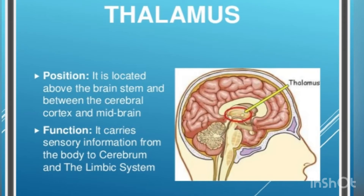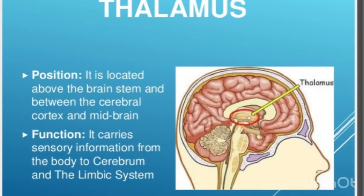Thalamus position: it is located above the brain stem and between the cerebral cortex and midbrain. Function: it carries sensory information from the body to the cerebrum and the limbic system.